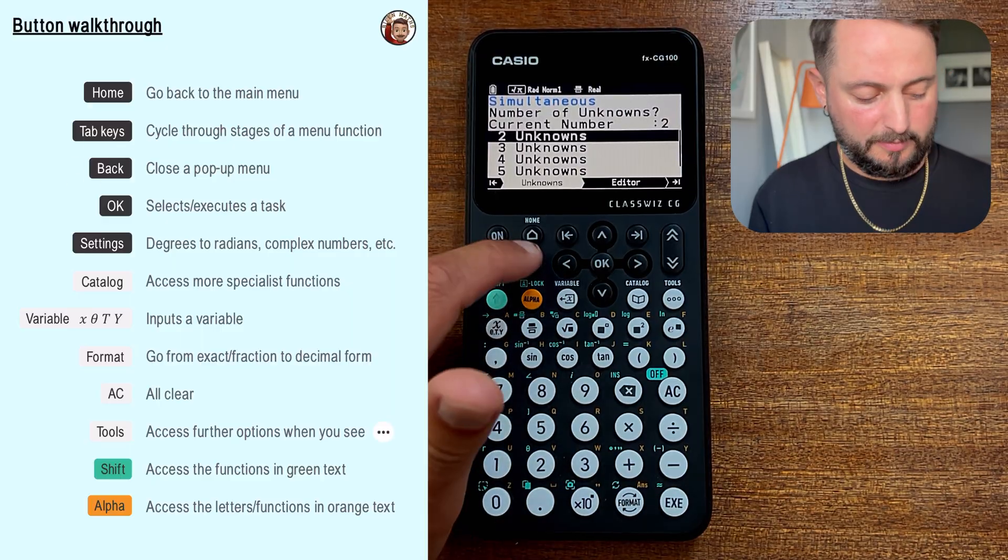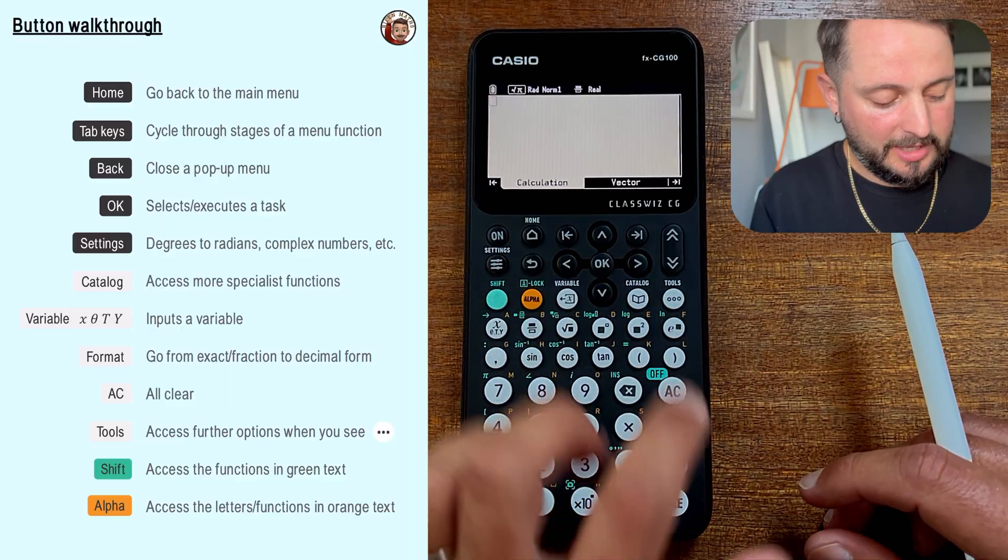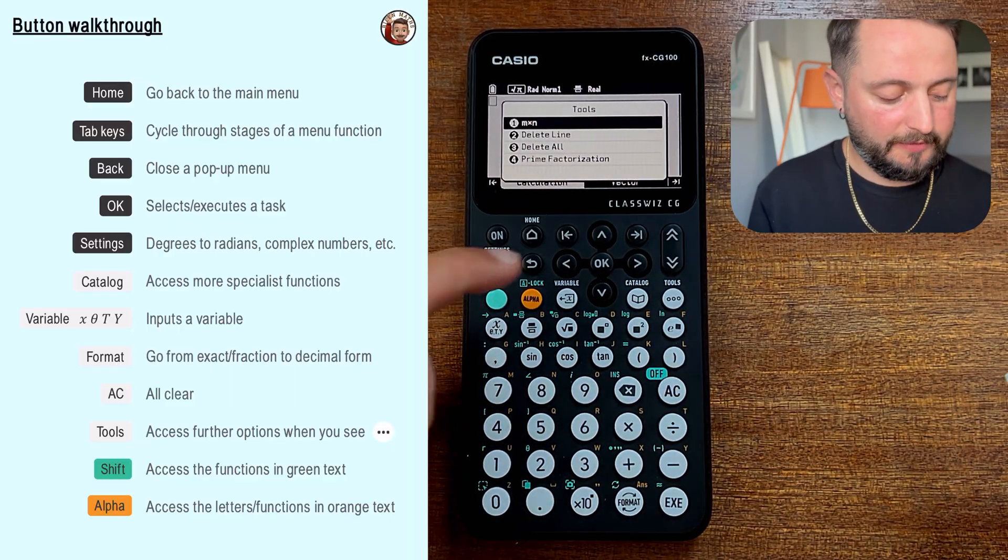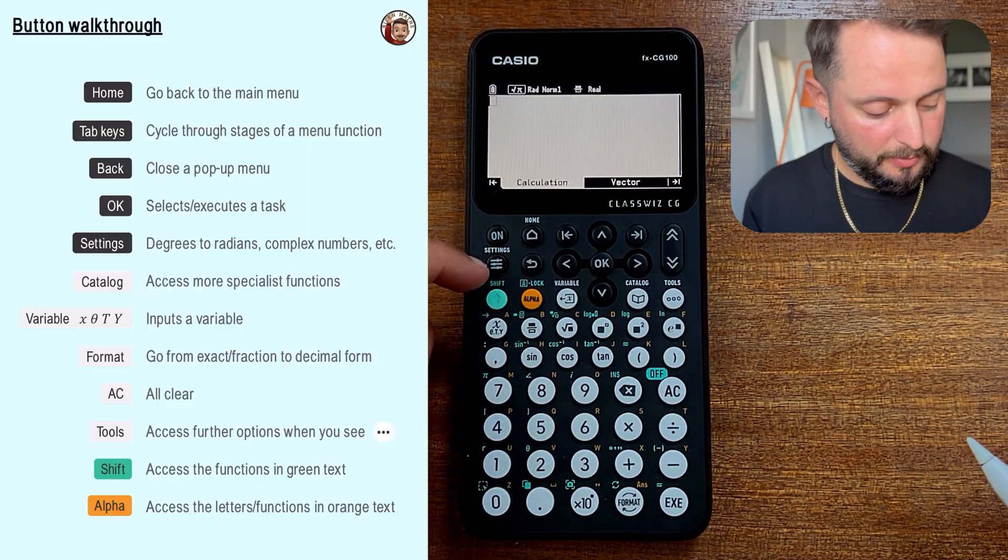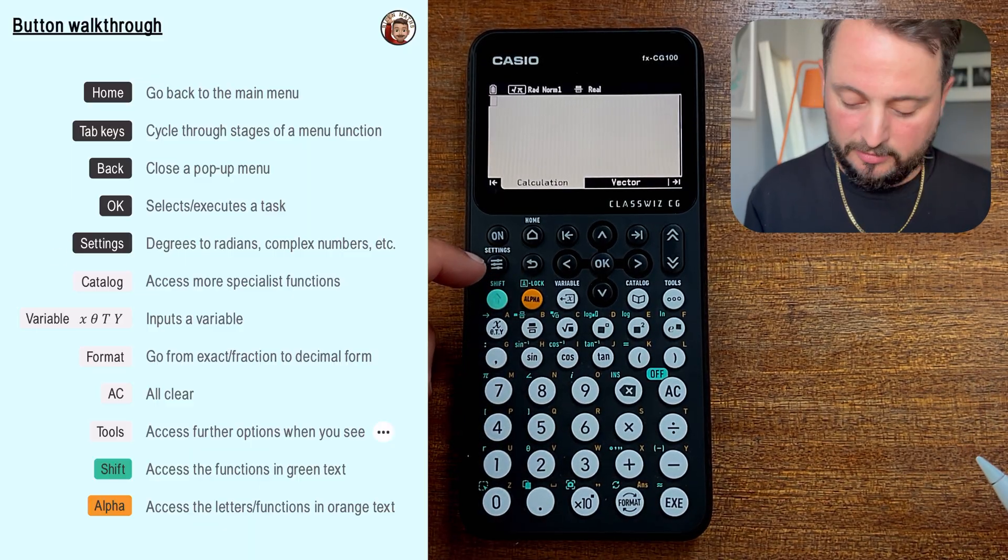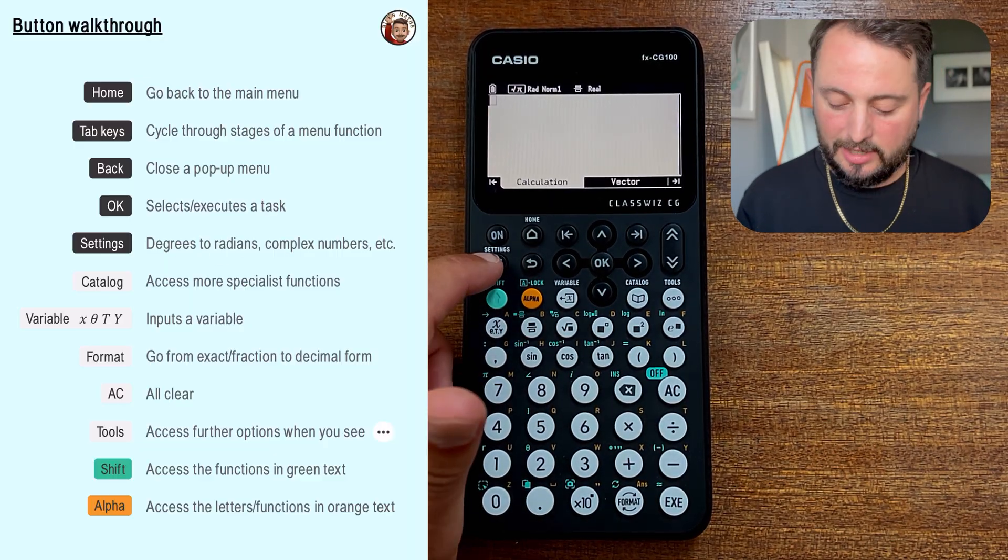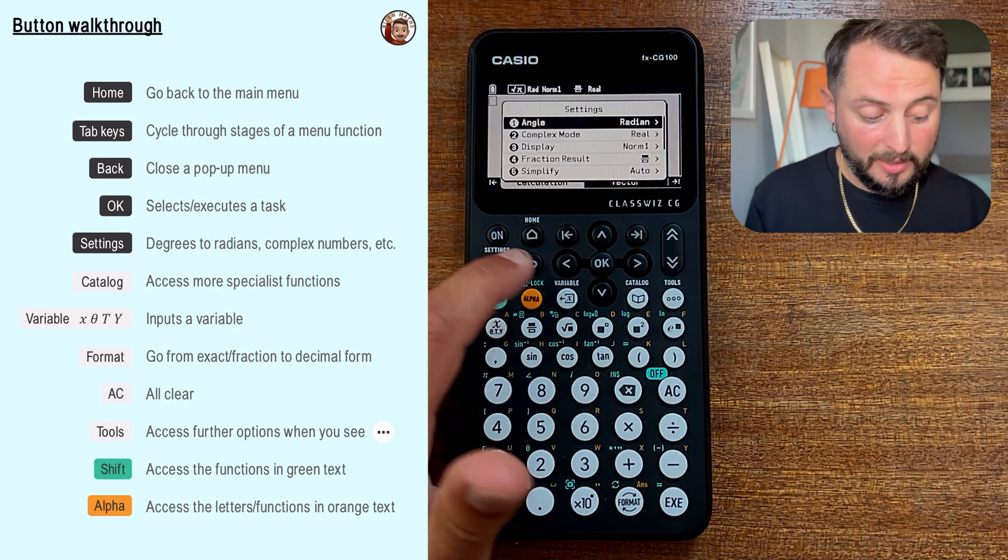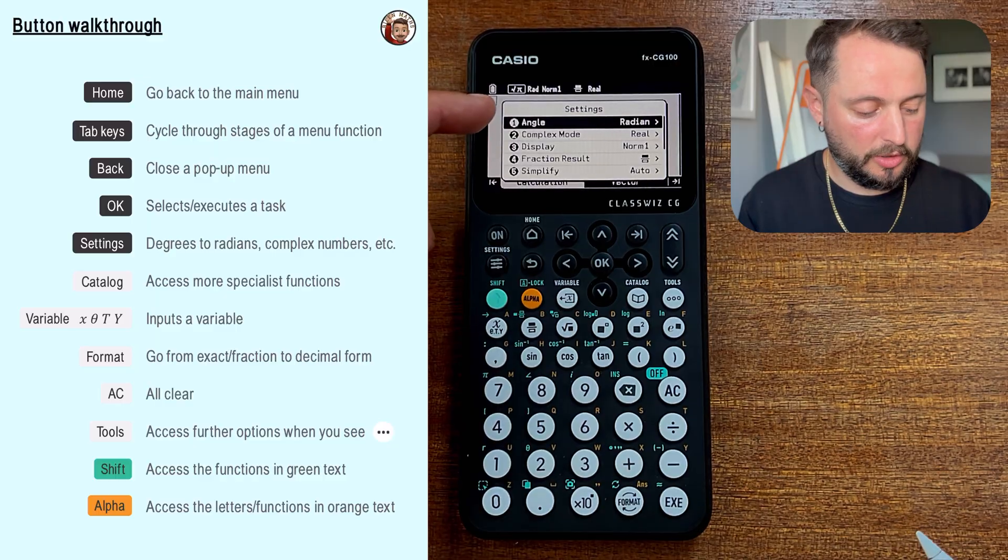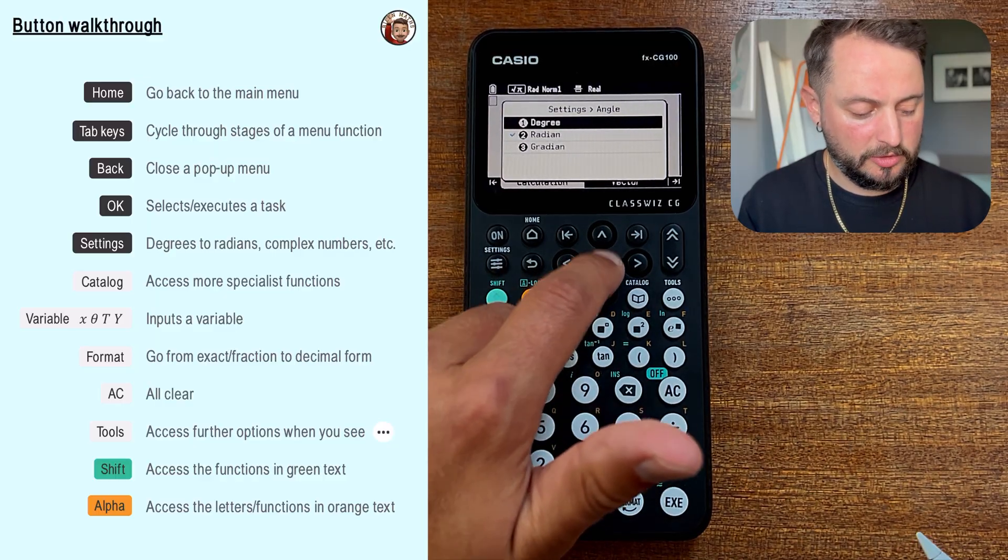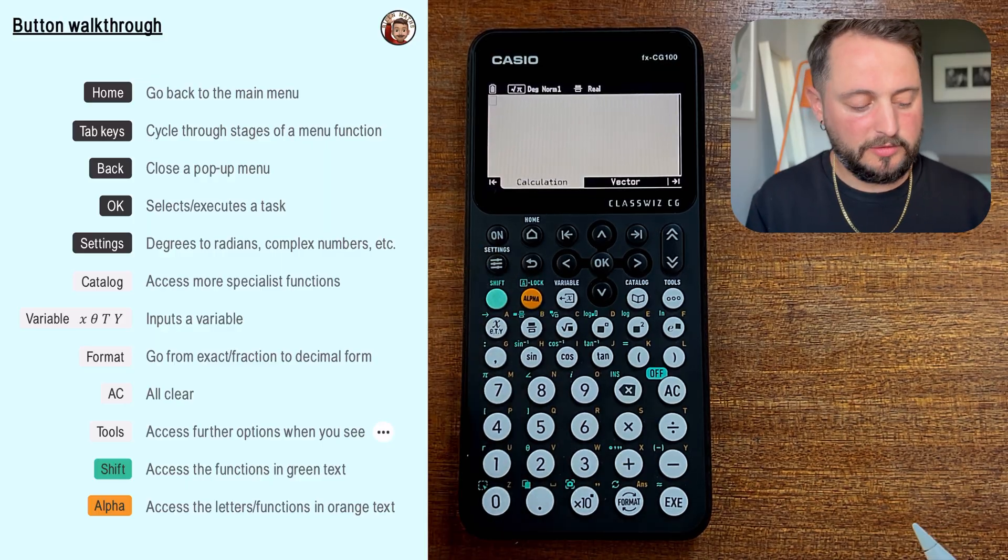The back button has a specific kind of use. It will kind of close a pop-up menu that you might have. So let's say that we were in calculate and we had this sort of little extra menu pop-up here. If I press the back button, that will just disappear. The settings button, which is this one with the line with these little extra etchings on it, this will be really useful when you are in calculate mode, which we're in right now. It'll allow us to change from degrees to radians, maybe put complex numbers in if you're doing further maths. You can just navigate using this part over here. So for example, if I want to go from radians here, I want to change it to degrees, I can just press OK and you'll see it's now changed. Probably quite a useful thing that you're going to need when you're first using this calculator.